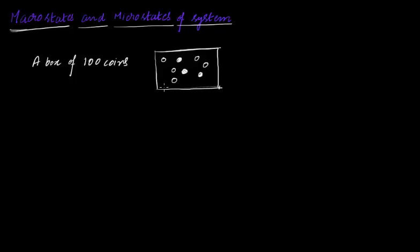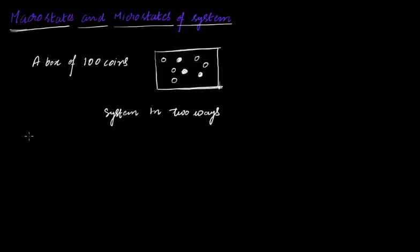Now you can describe this same system in two different ways. Let's think about what those two possible ways are. Perhaps one way is to actually go through each of the coins. Let's assume that all the coins are distinguishable — perhaps you have marked all the coins one, two, three, and so on. So you can make a table of all the possible arrangements, or rather the current arrangement.